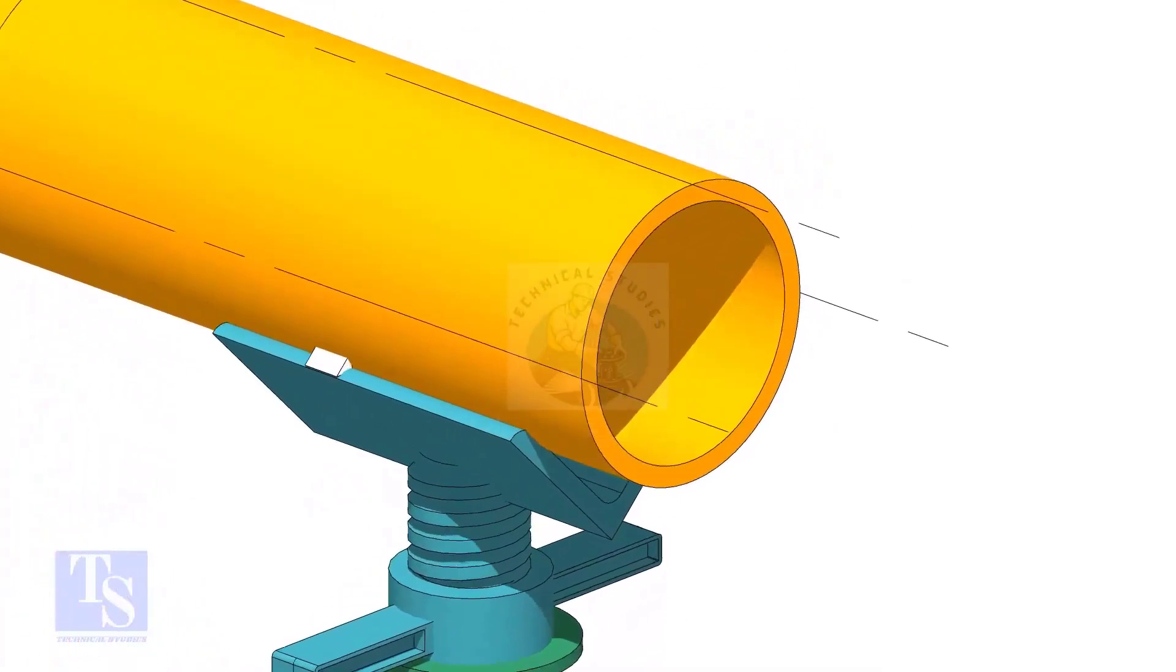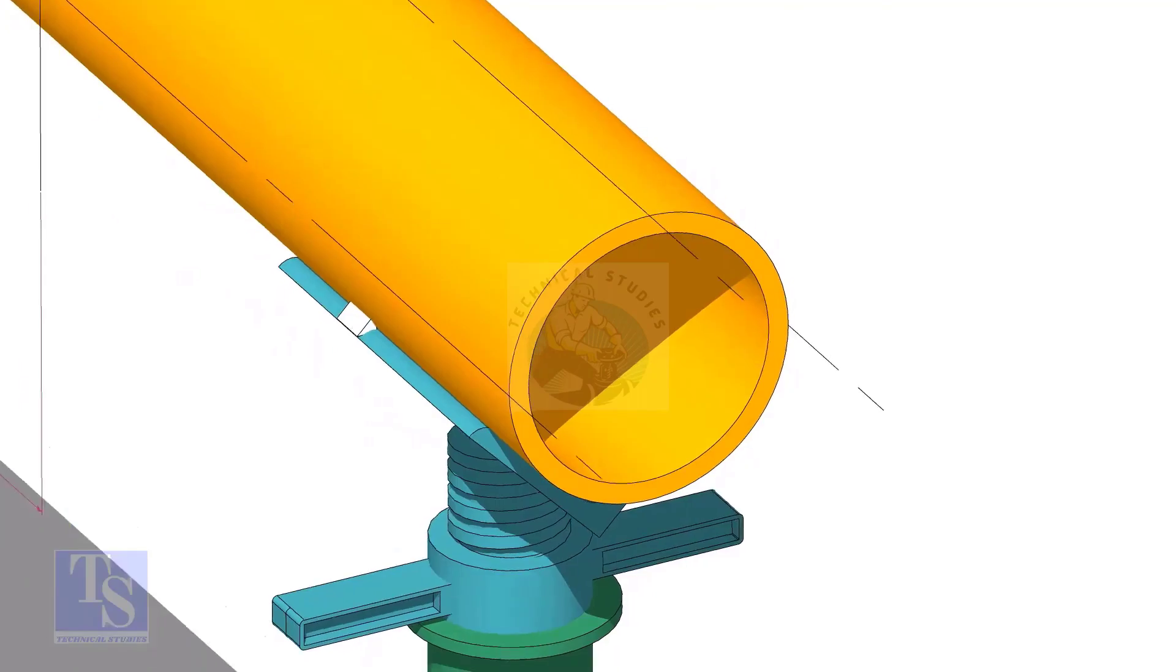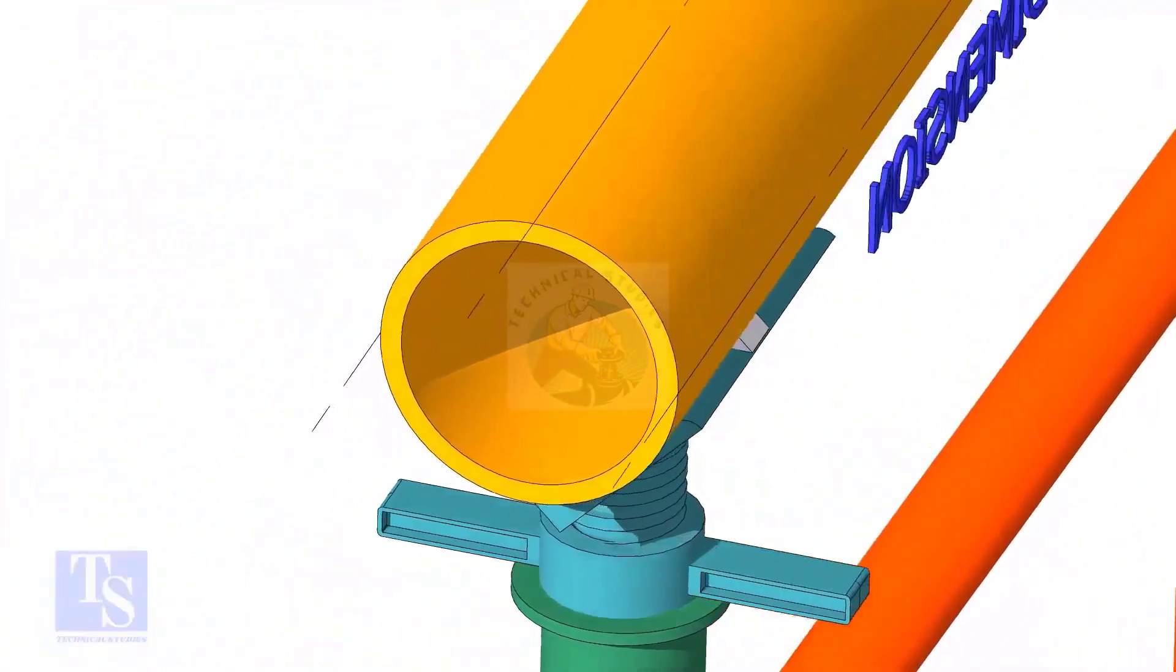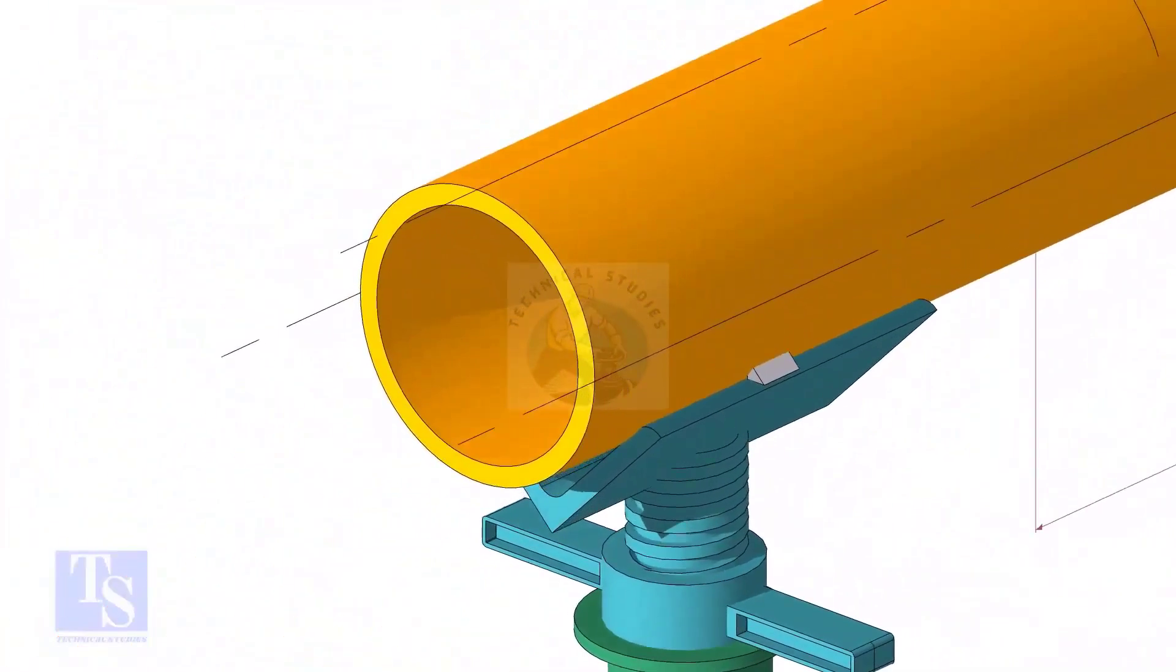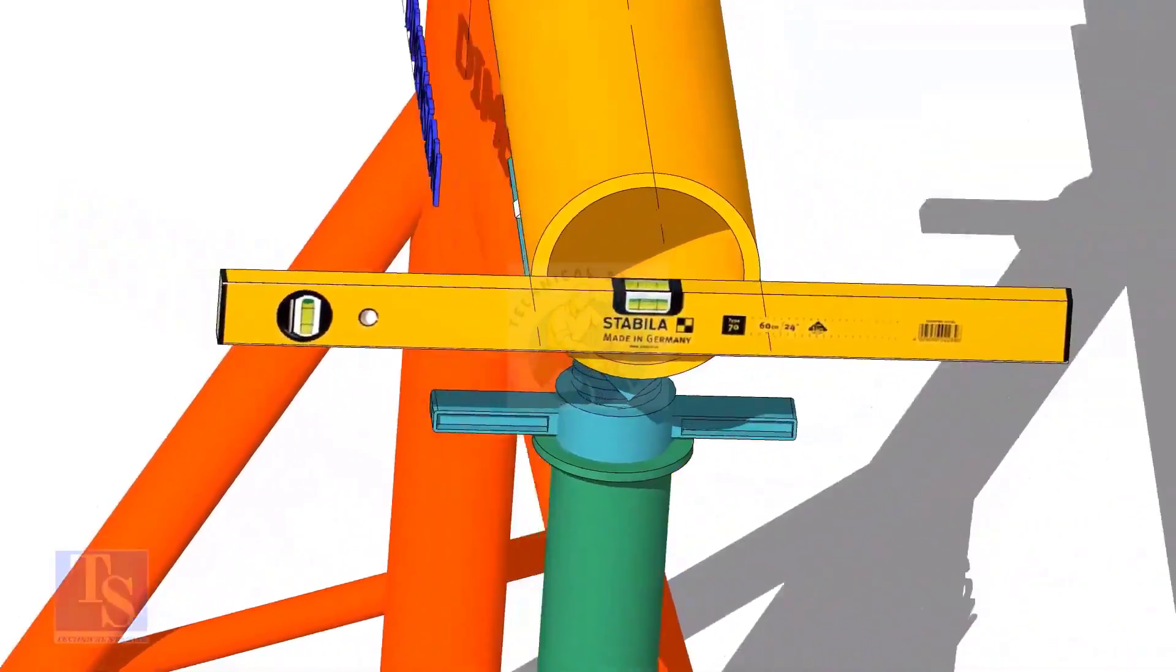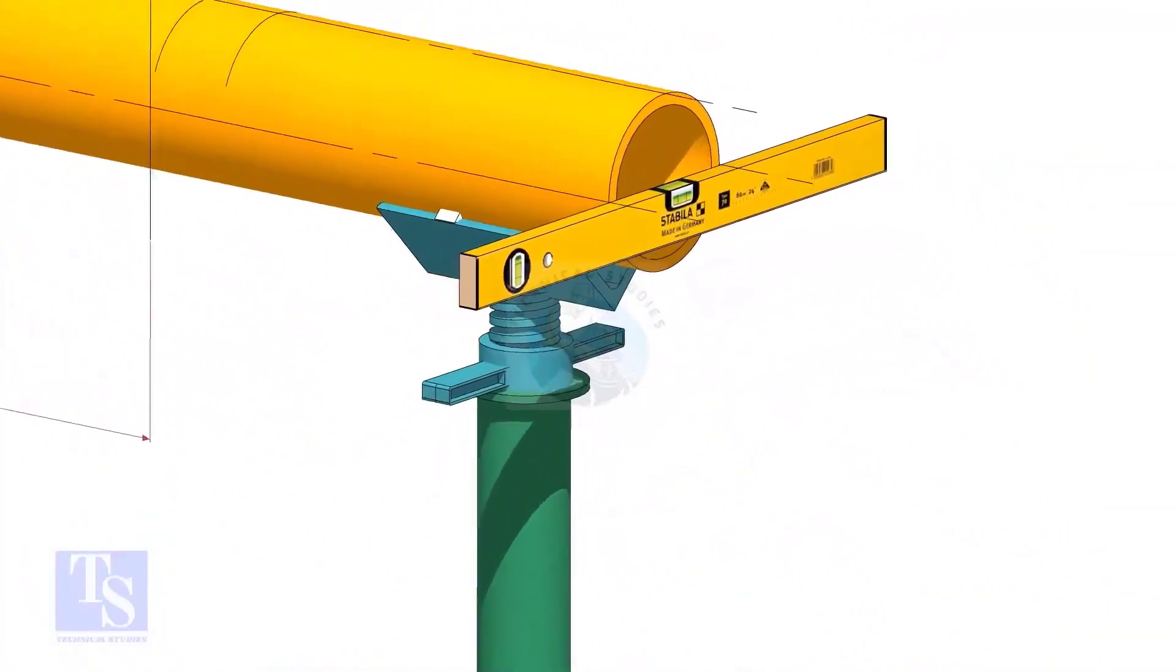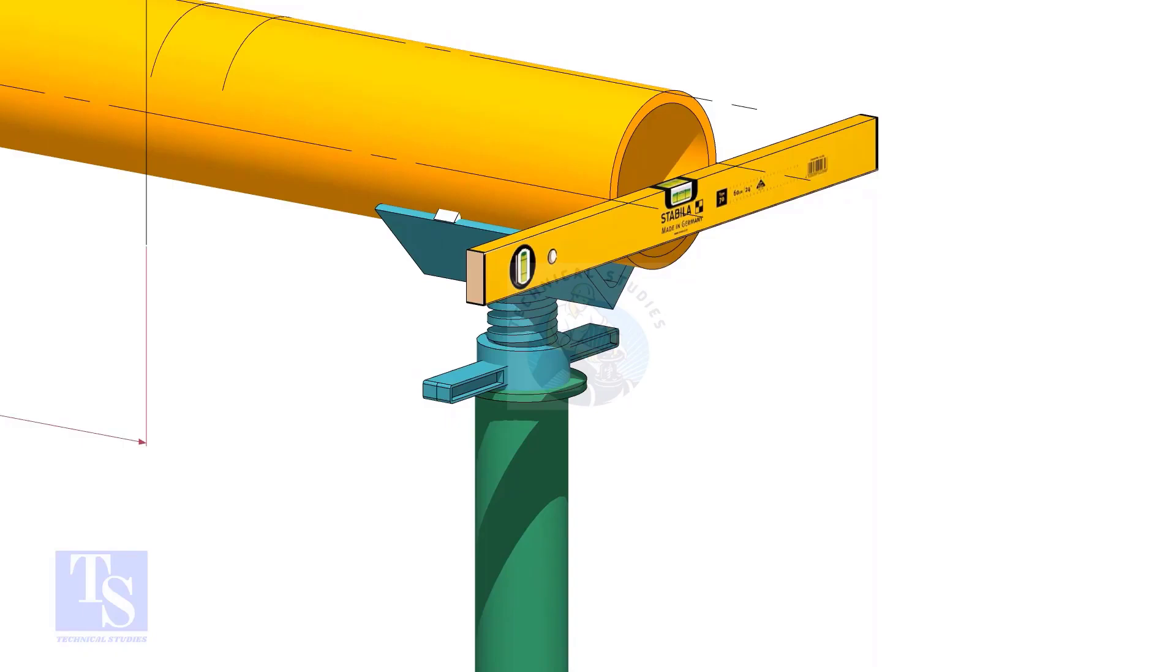After leveling the pipe, mark the center line and two quarter lines. Arrest the pipe if required and make small tack welds.